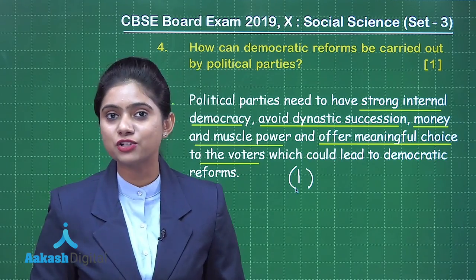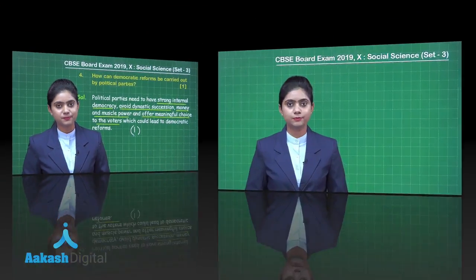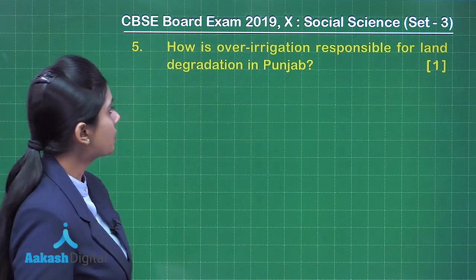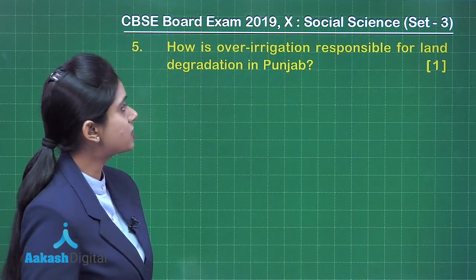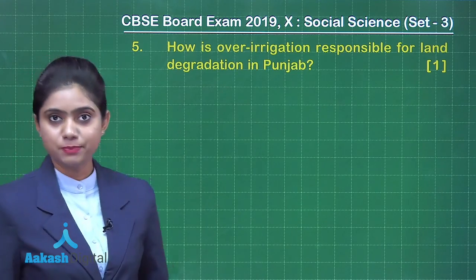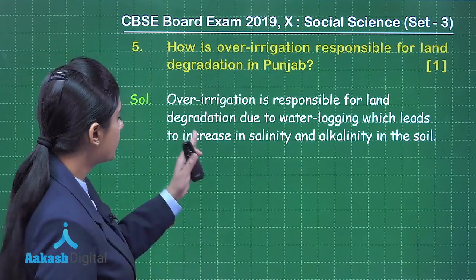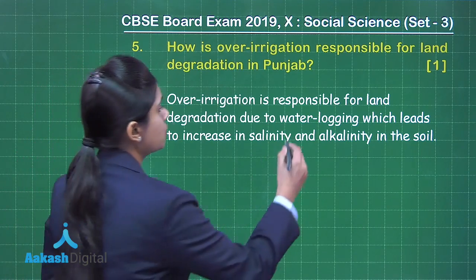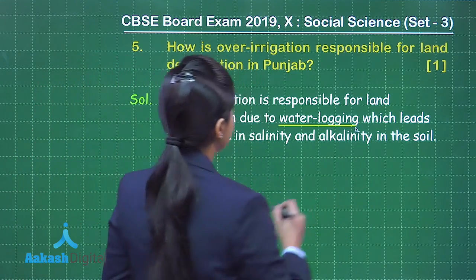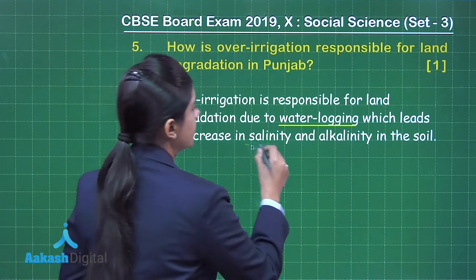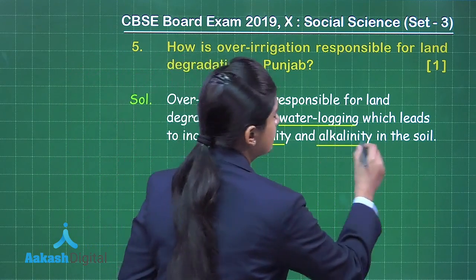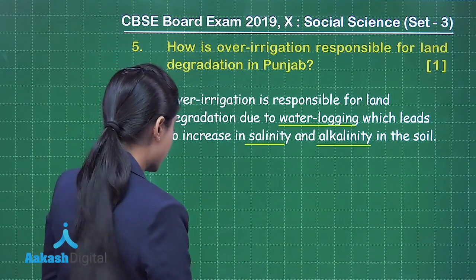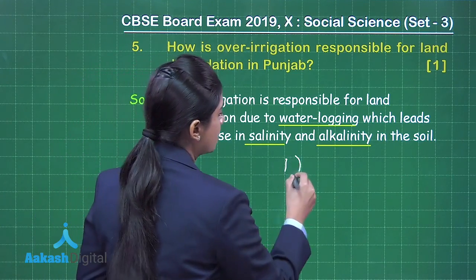Question number 5: How is over-irrigation responsible for land degradation in Punjab? Over-irrigation is responsible for land degradation due to water logging, which leads to an increase in salinity and alkalinity in the soil. This answer will help you get one mark.